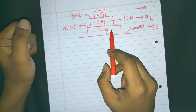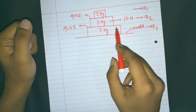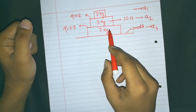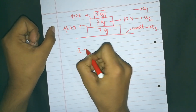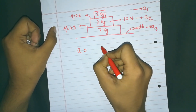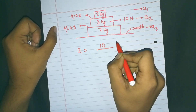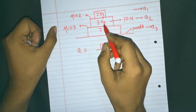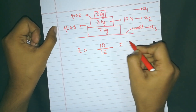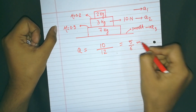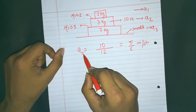Let's calculate: if all the blocks move together, what would be the acceleration of the system? Acceleration equals net external force divided by total mass — that is 10N divided by (7 + 3 + 2) = 12kg, giving us 5/6 meters per second squared. Let's name this the common acceleration.